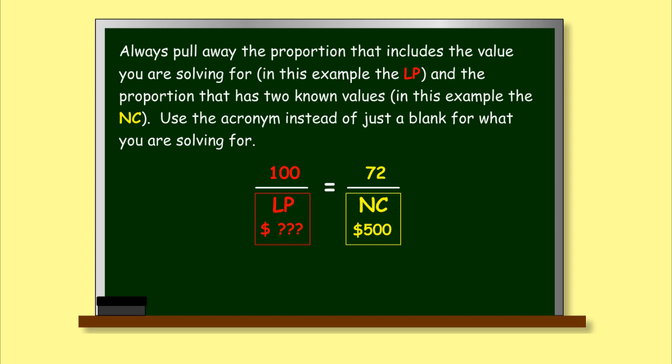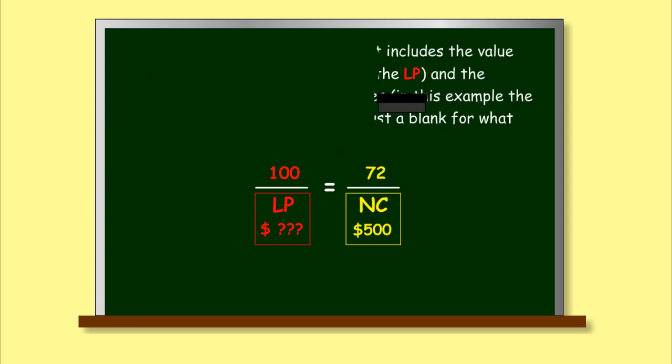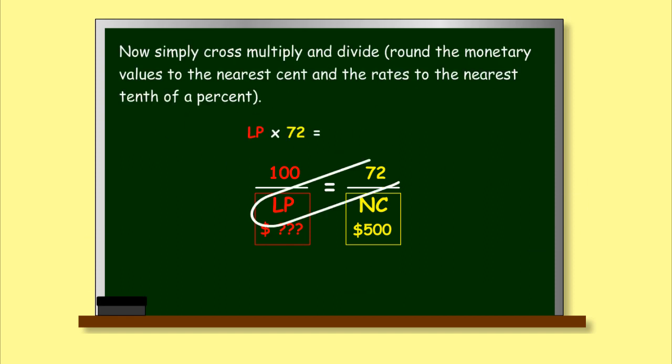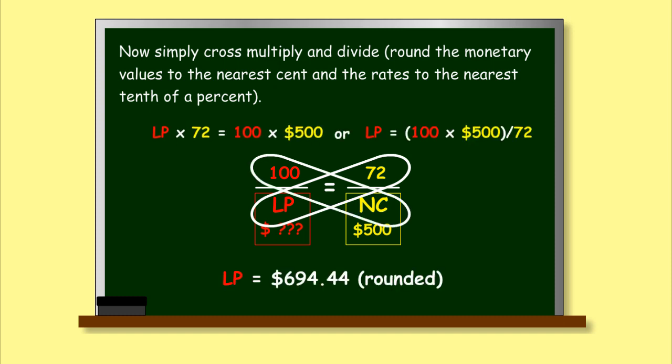Always pull away the proportion that includes the value you are solving for and the proportion that has two known values. Use the acronym instead of just a blank for what you are solving for. Now simply cross multiply and divide. Round the monetary values to the nearest cent and the rates to the nearest tenth of a percent.